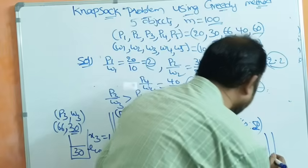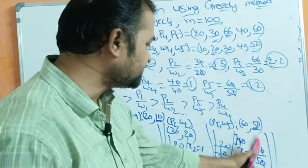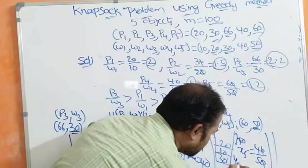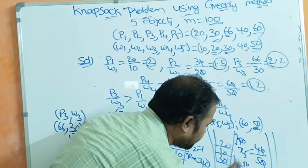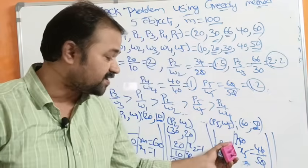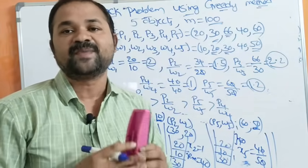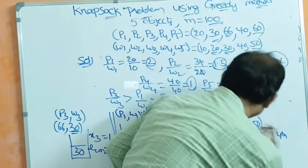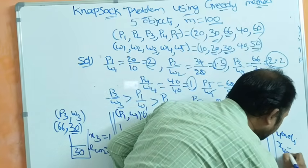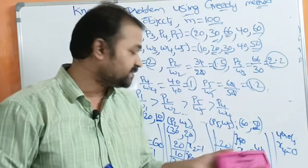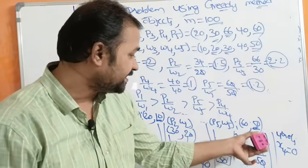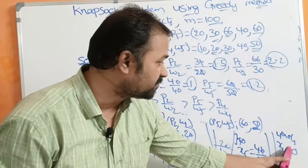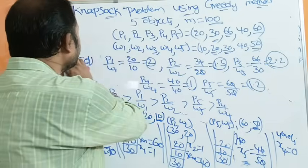We place 4/5 of the fifth object, which equals (4/5) × 50 = 40 kg. The bag is now full. The fourth object cannot be placed, so x4 equals 0.